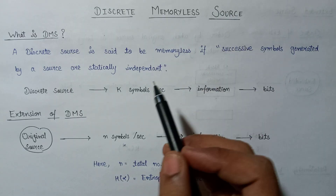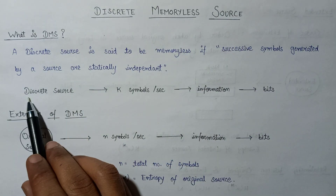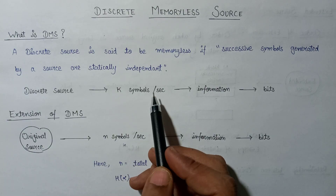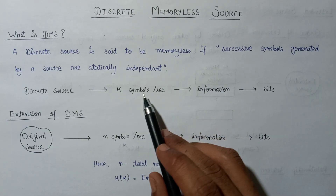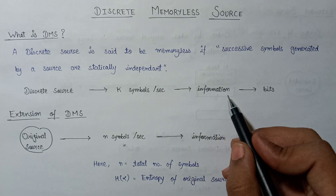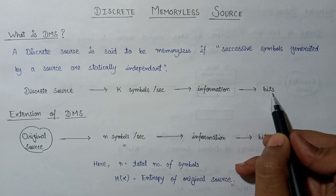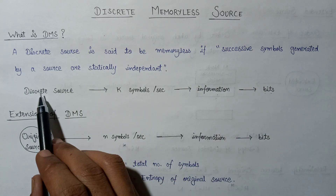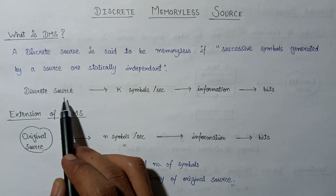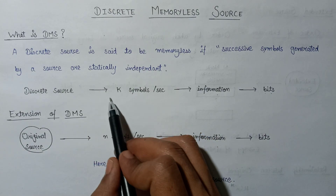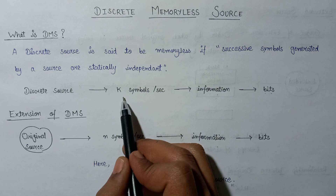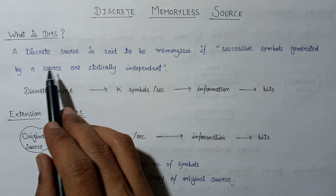Here is an example showing a discrete source that generates k number of symbols per second. Each symbol has some information content, which can be represented in the form of bits. This discrete source can be said to be a discrete memory-less source if and only if these k symbols generated by this source are statistically independent.